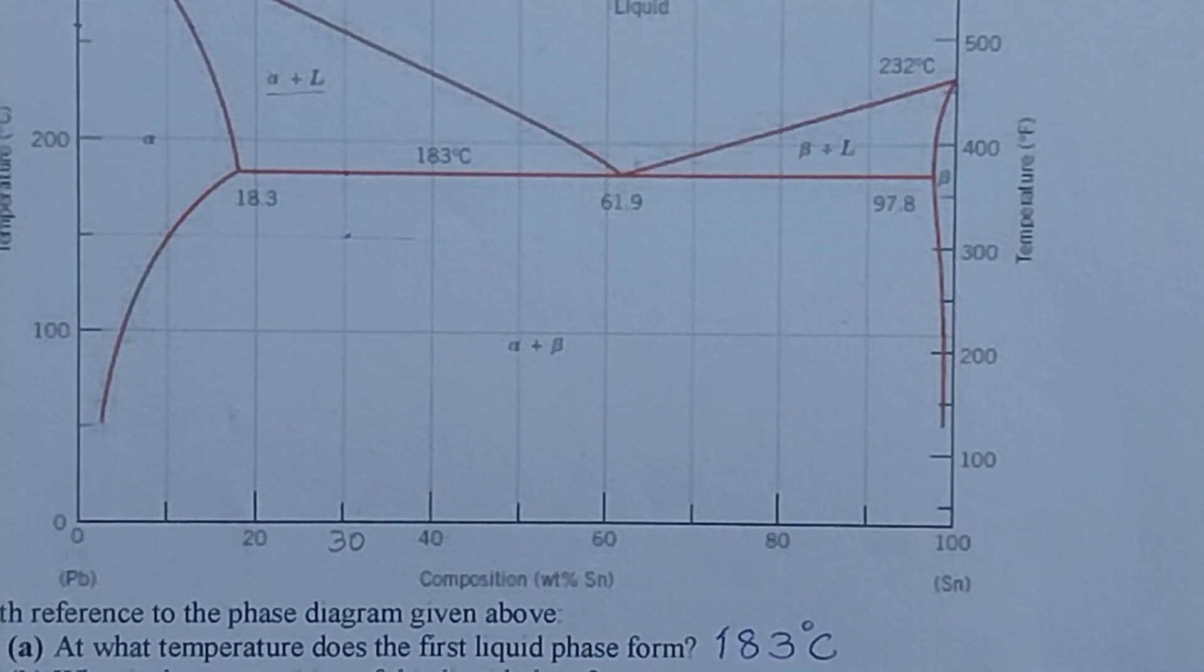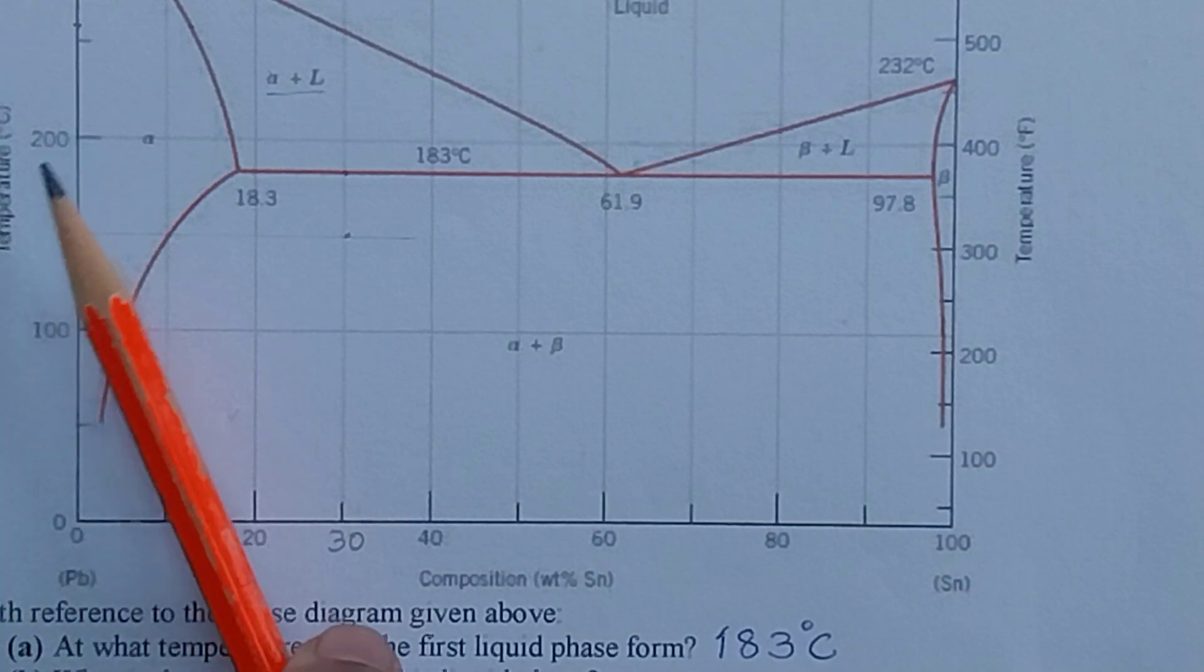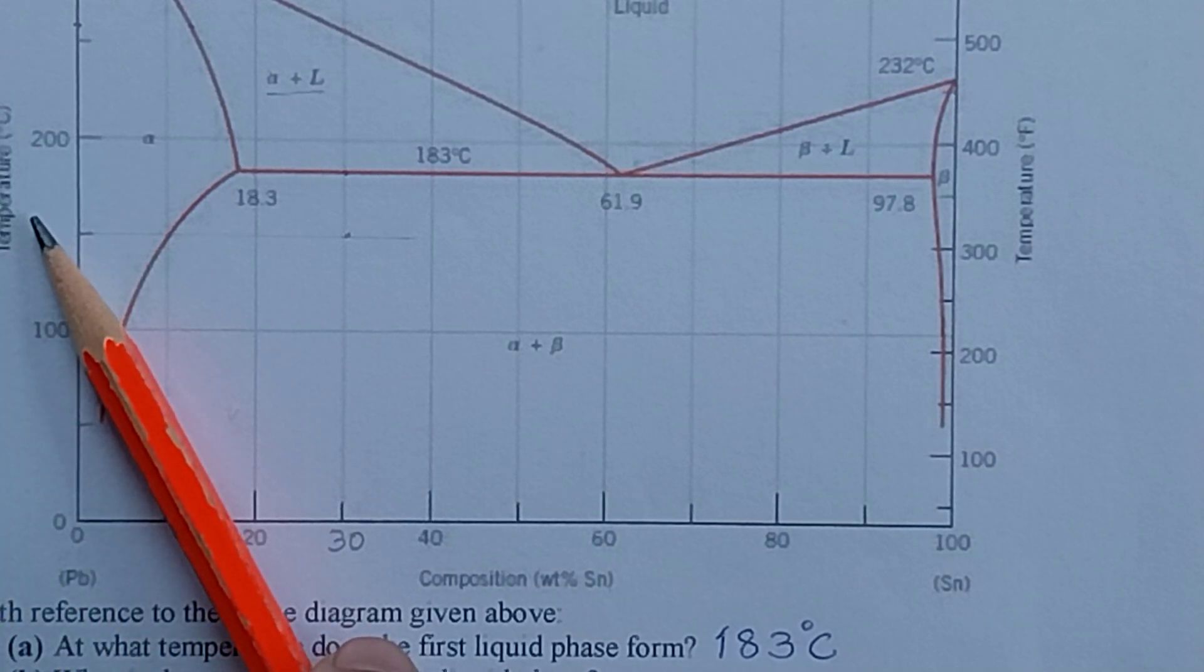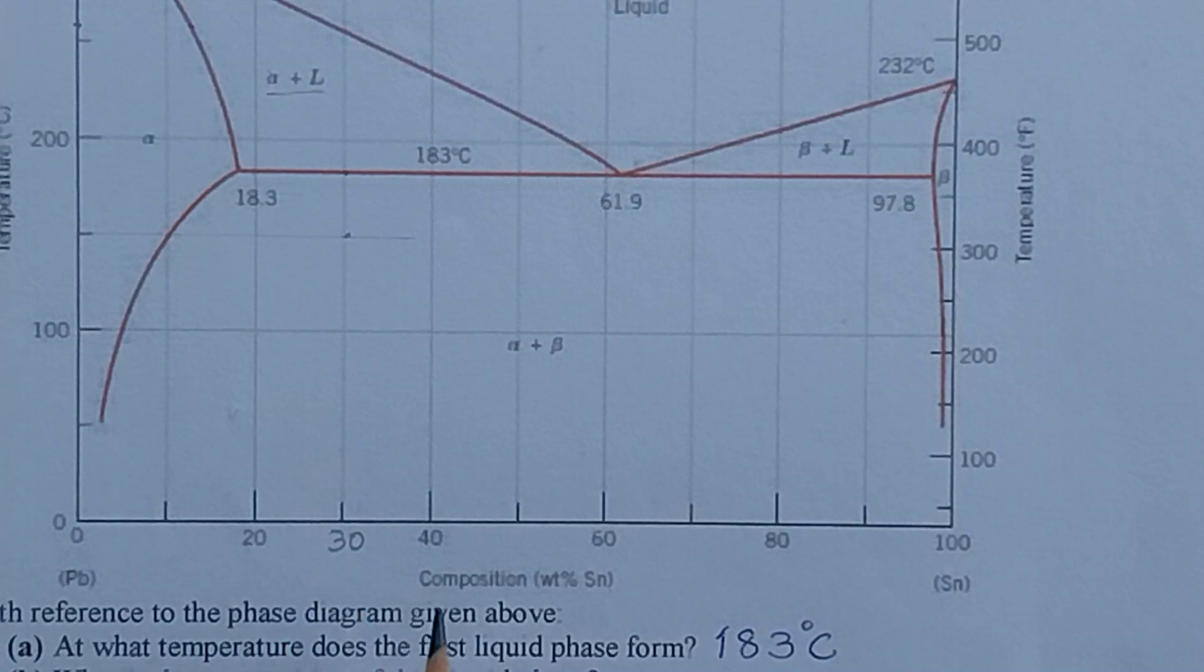As you can see on the y-axis here is temperature, so this is going to be temperature in degrees Celsius. And on the x-axis is written composition weight percent SN. So the numbers that you see here 0, 20, 30, 40, 50, 60, 80, up to 100 represent the percentage of tin. The percentage of lead obviously is not given and it will be the difference from 100 of the SN percentage.